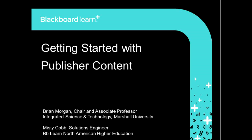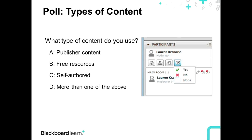Misty Cobb: Thank you so much, Lauren. If you all will just confirm once again that you're able to hear me by giving me a green check mark. We're going to begin our time together today with a question using the polling tool. The question is: what type of content do you use? A, publisher content; B, free resources; C, self-authored; or D, more than one of the above. Please use the polling tool to select your answer choice.